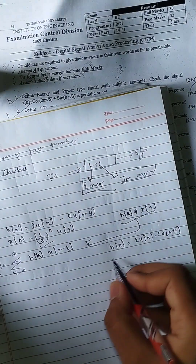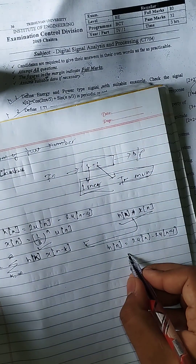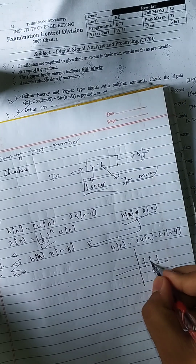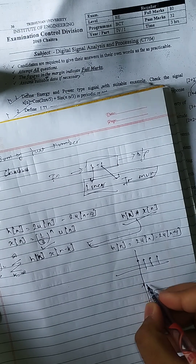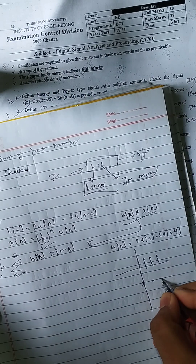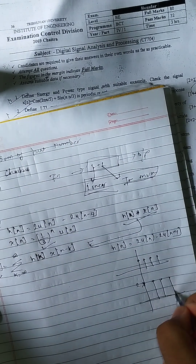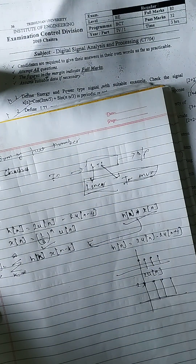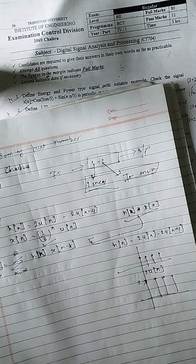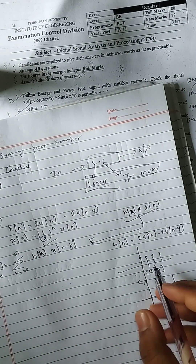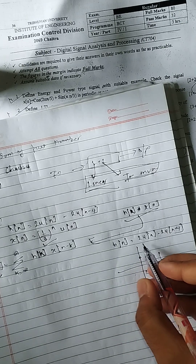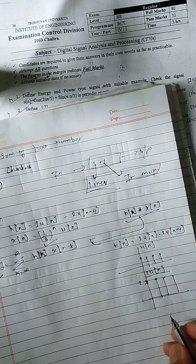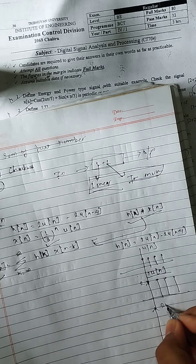This is the graph that we have to make. It shows the positive and negative values. The first thing we have to do is u(n), then we have 2u(n). The second step is also 2u(n).